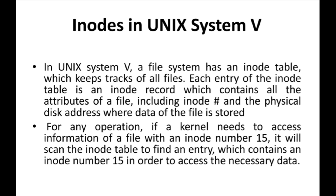That particular record will contain all the attributes of a file including the INODES number. For every file there will be an INODES number; if you want to identify a particular file you can use the INODES number. The INODES number, attribute details, physical address details of the file, and also the data details will all be stored in the INODES table — every piece of information about a file present in your OS.